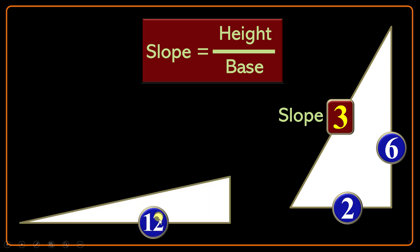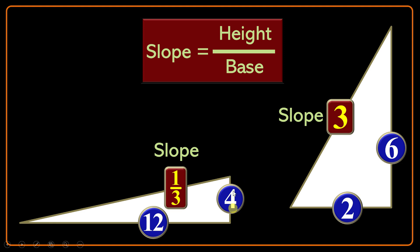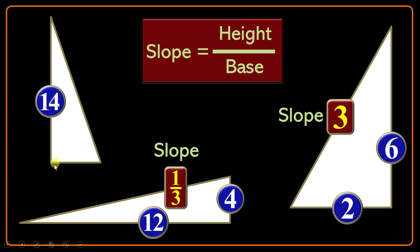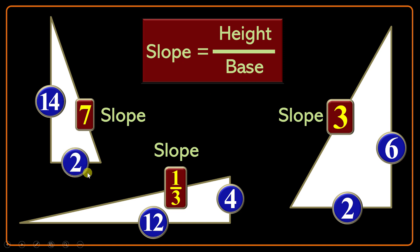The other example: suppose the base is given to be 12 and the slope is 1/3. Based on the equation, slope multiplied by base will be the height. So 1/3 times 12, or 12 over 3, will be 4 — the length of the vertical side, or the height. Another example: the vertical side is given to be 14 and the slope is given to be 7. Here, height over slope also gives the base, so 14 over 7 will be 2.